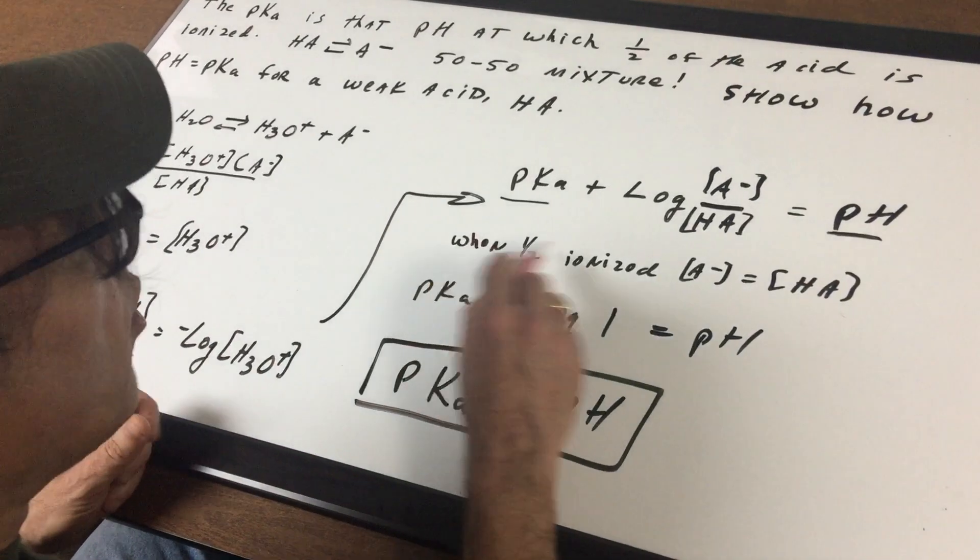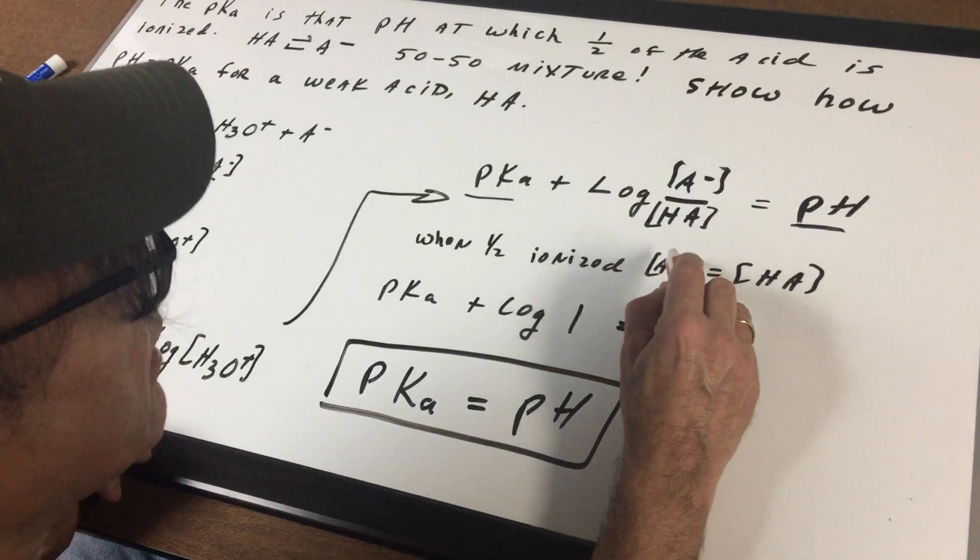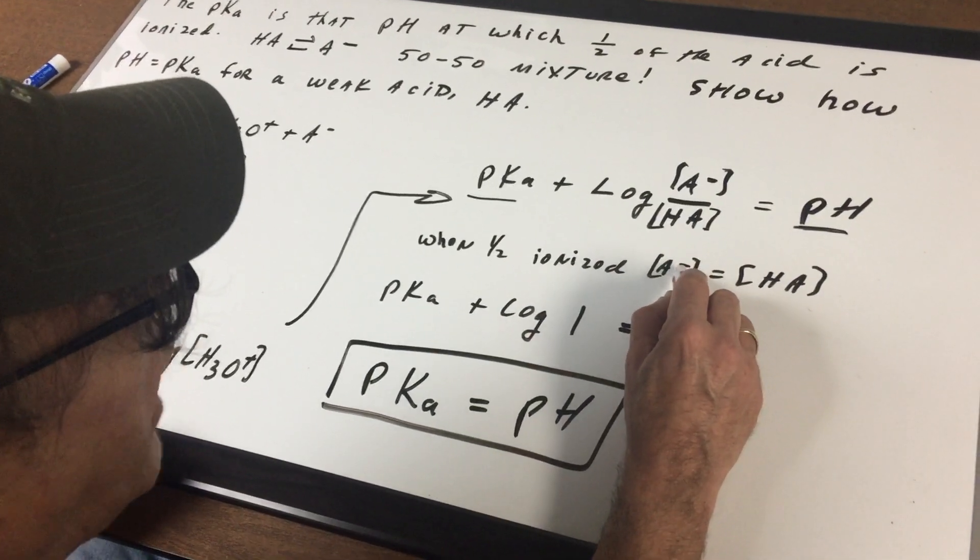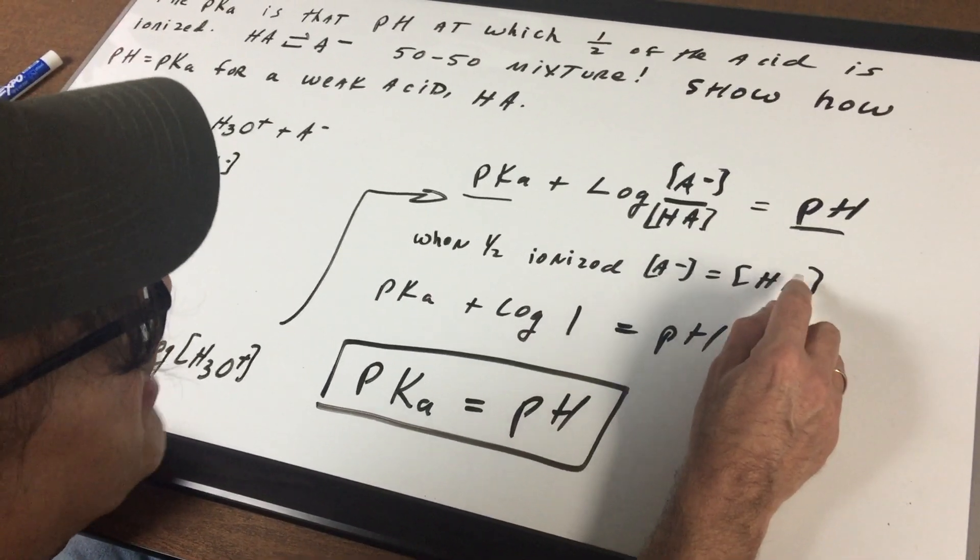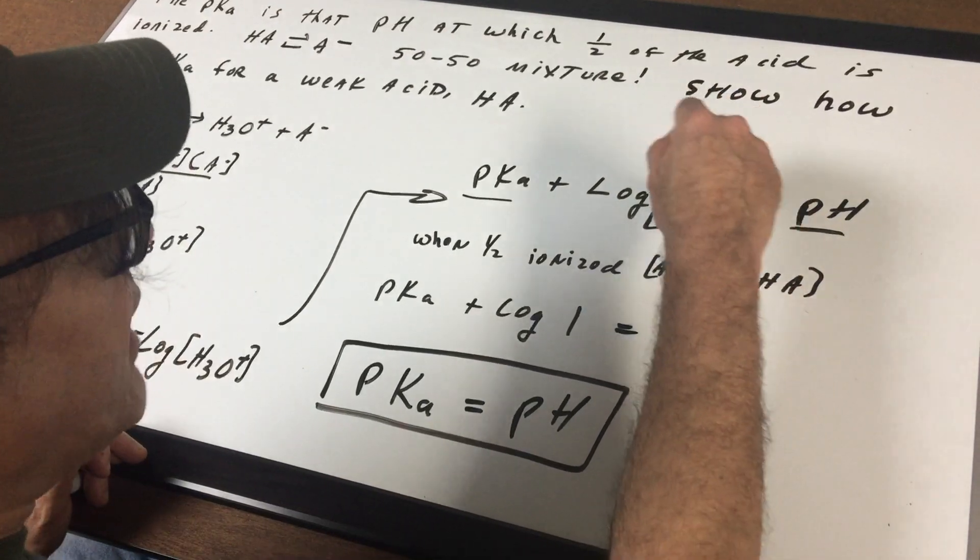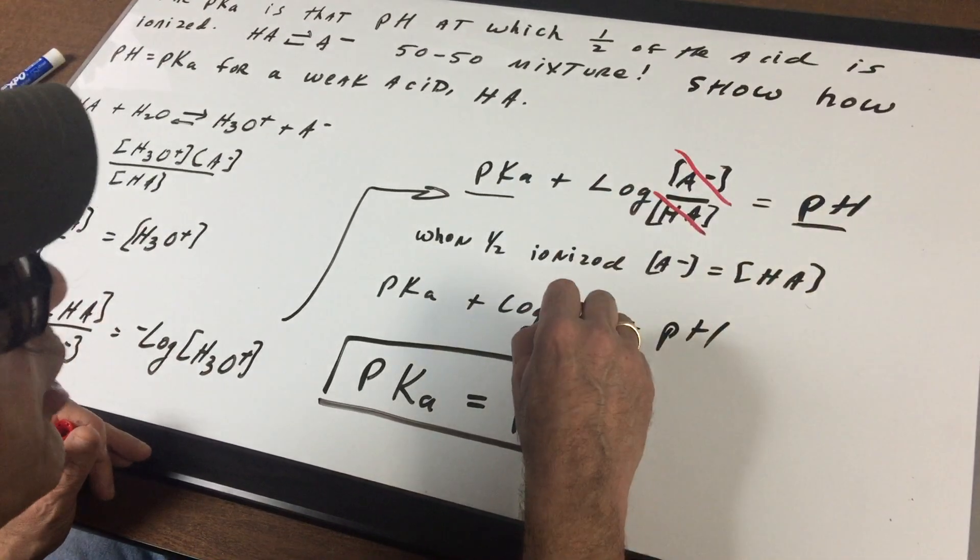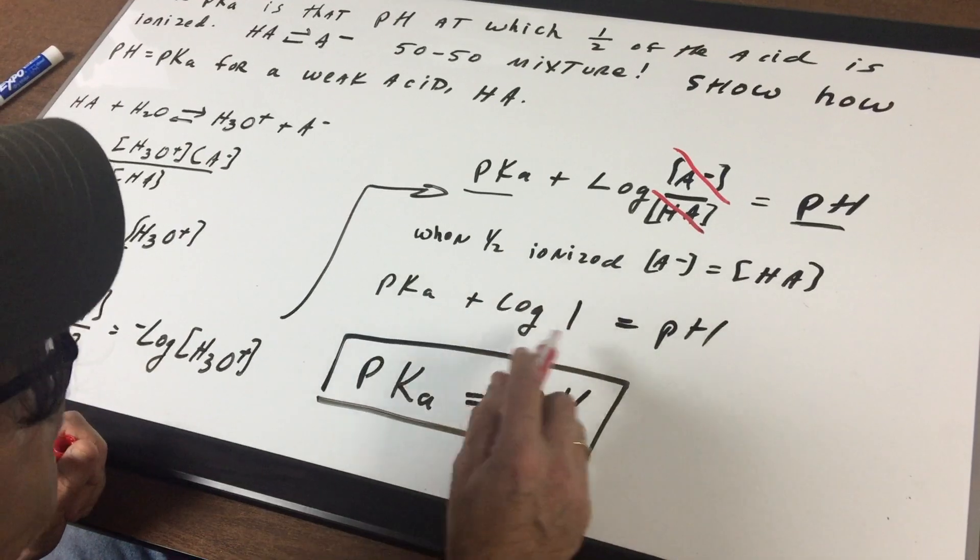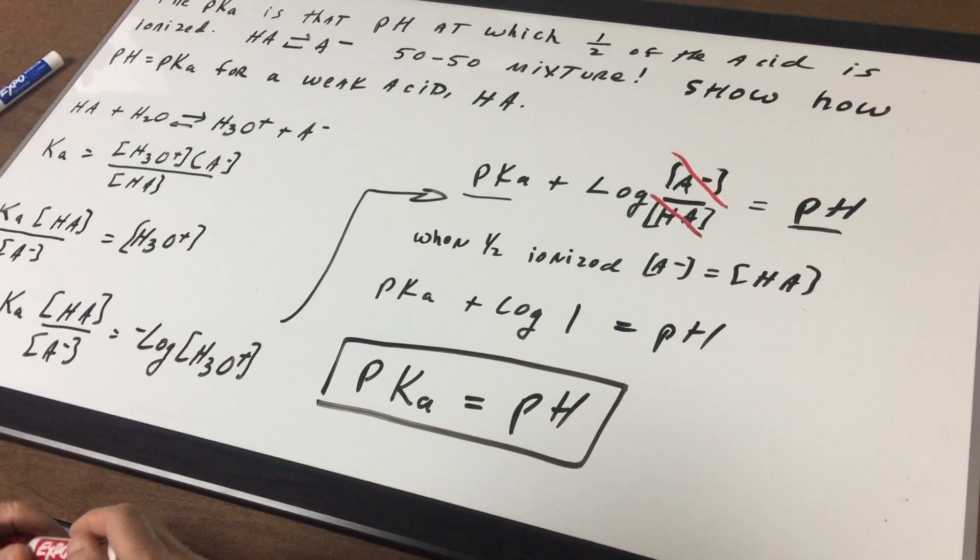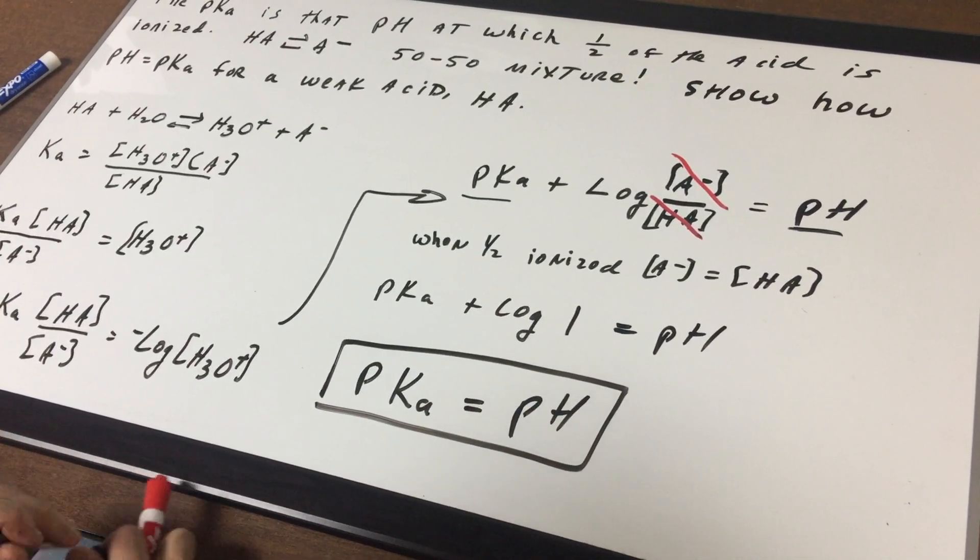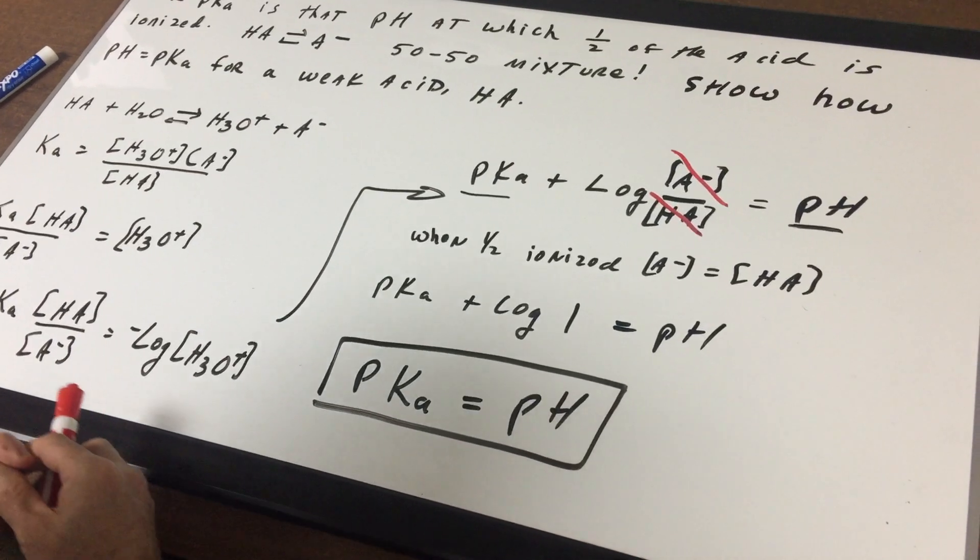Now, here's the trick. When half ionized, that means half of it is in the A minus form, and half of it's in the HA form. That means that these two would cancel out and give you one. The log of one is zero. So therefore, this would show that the pKa equals the pH.